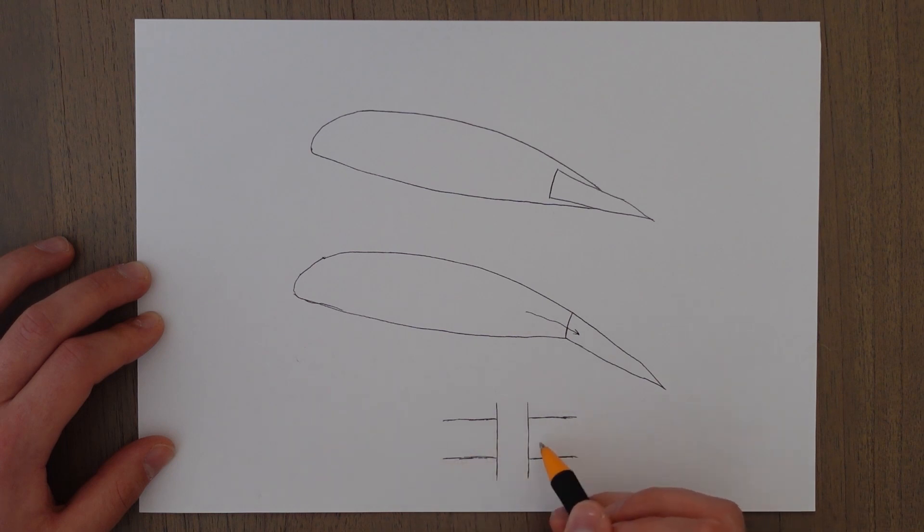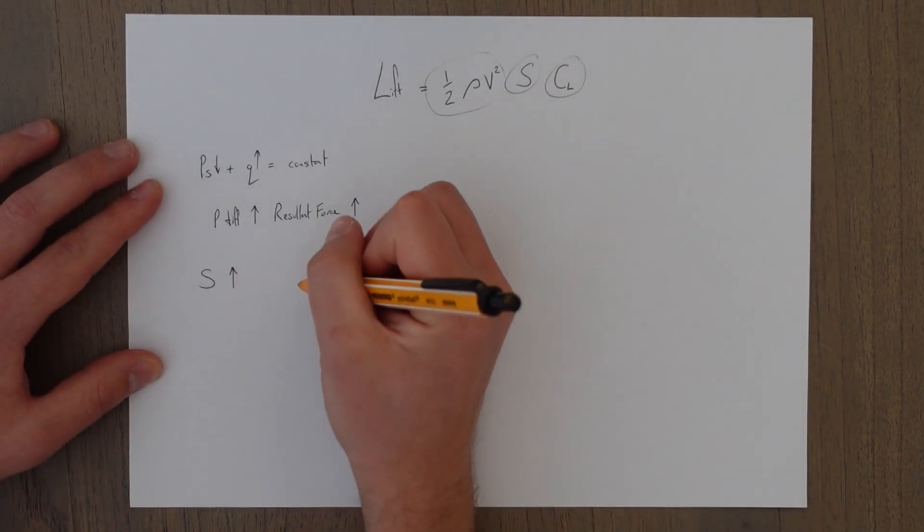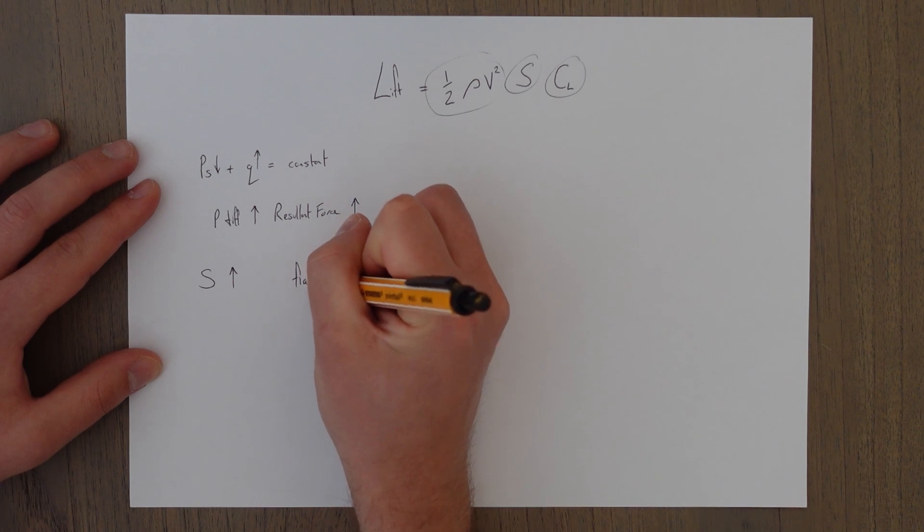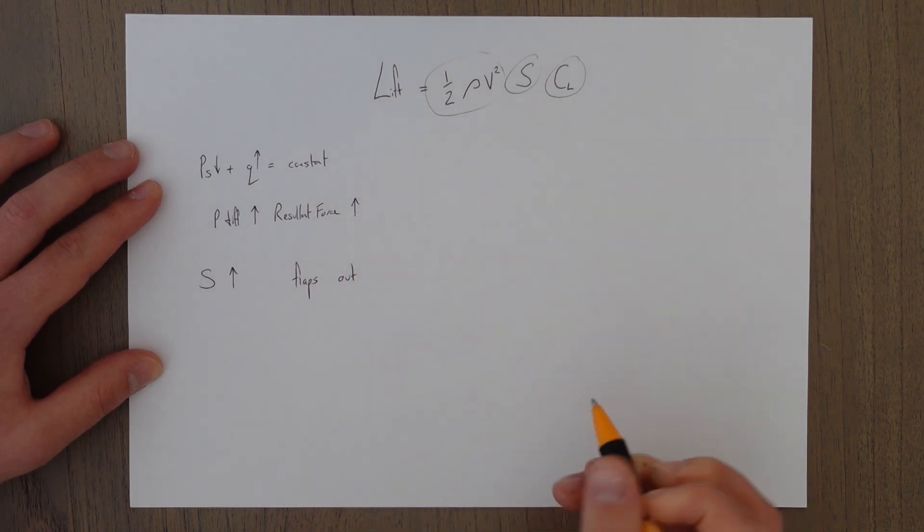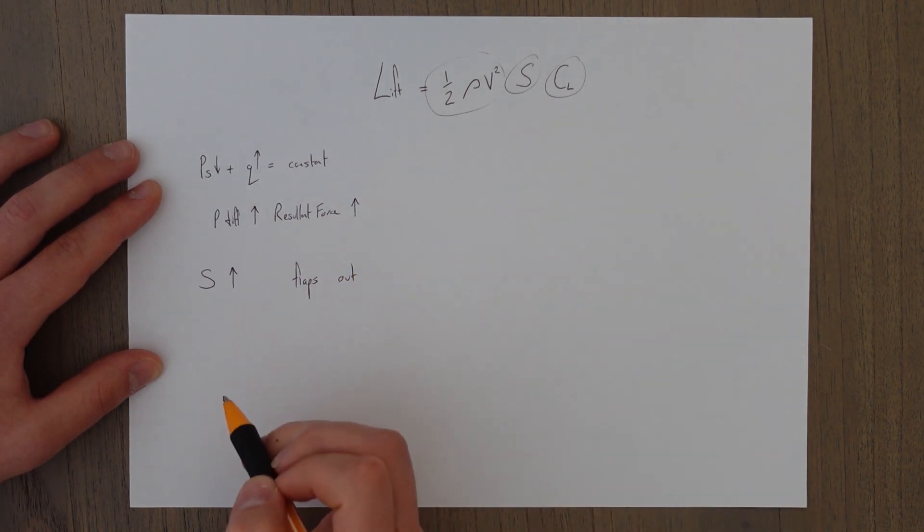And what that does is, if you look at a top down view, this should be the situation with the flaps in, and then with the flaps out you get this tiny little bit of extra area over the wing. So by extending the flaps, if the flaps are out our area will go up.